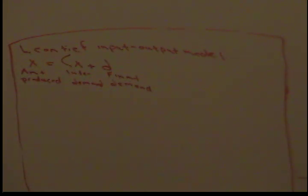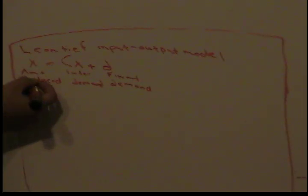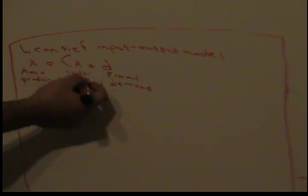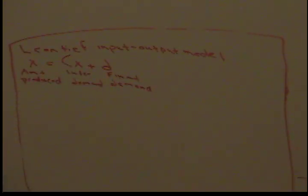Today we're going to talk about an application of linear algebra in economics called a Leontief input-output model, where x equals Cx plus D. Here, x is the amount produced, Cx represents intermediate demand, D represents final demand, and C is the consumption matrix.